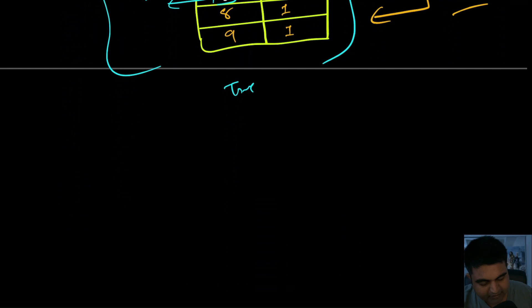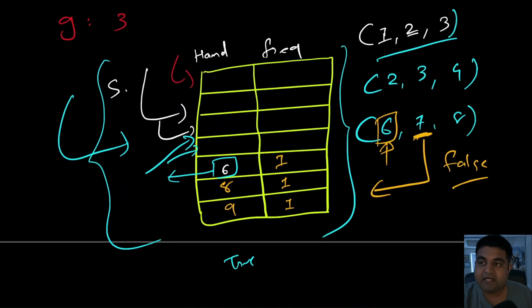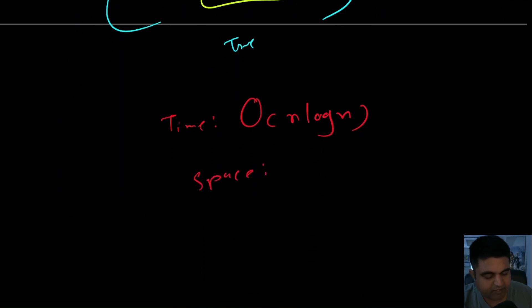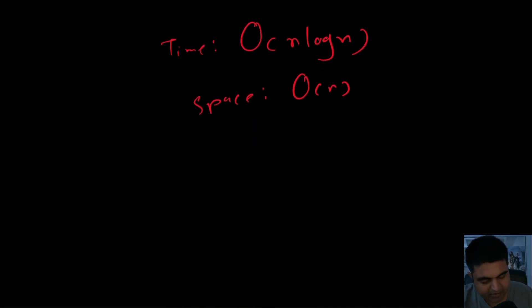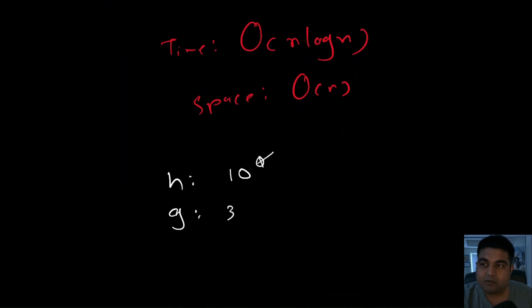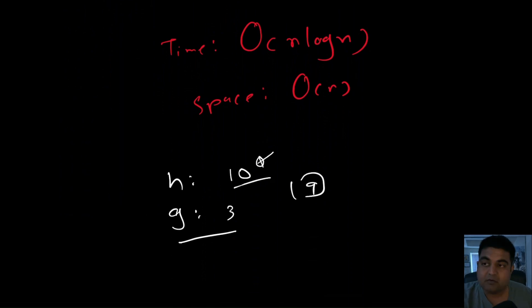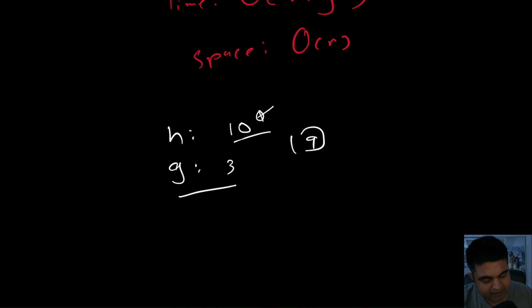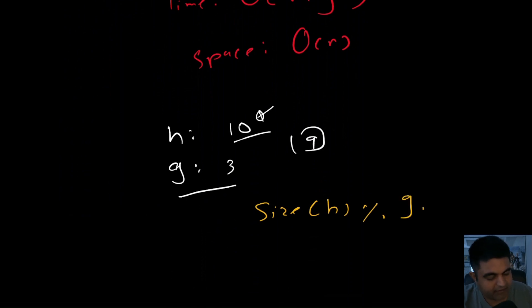For time and space complexity: time complexity is O(n log n) because it takes O(log n) to add each entry to the TreeMap. Space complexity is O(n) for the additional TreeMap. We can also add an optimization: if the total number of cards is not divisible by groupSize, we can immediately return false, since we cannot form complete groups. This eliminates bad edge cases early.